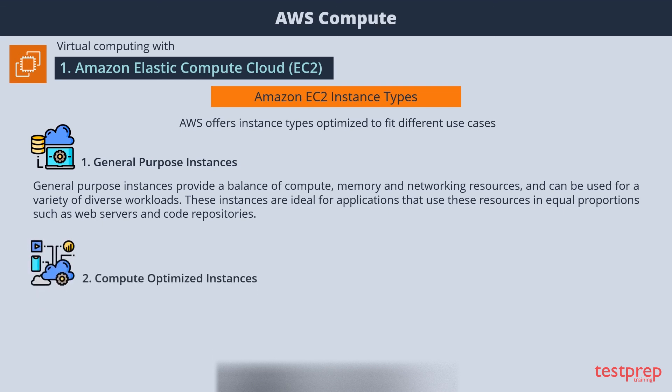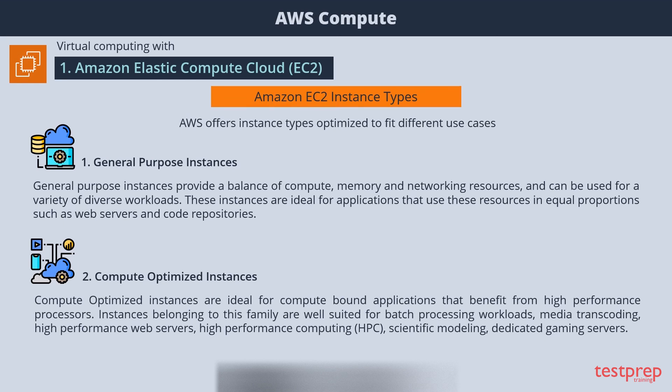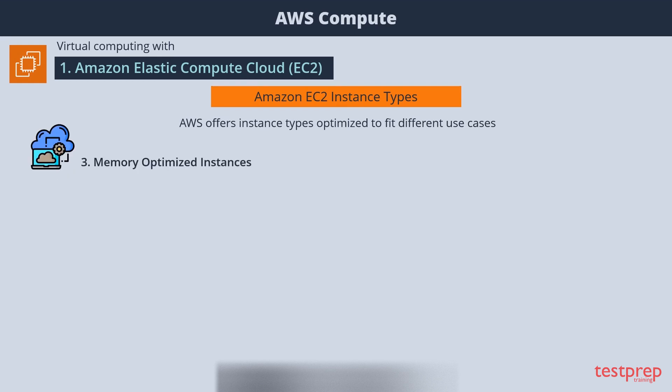Second, compute optimized instances are ideal for compute-bound applications that benefit from high-performance processors. They are well suited for batch processing workloads, media transcoding, high-performance web servers, high-performance computing, scientific modeling, and dedicated gaming servers. Third, memory optimized instances are designed to deliver fast performance for workloads that process large data sets in memory.